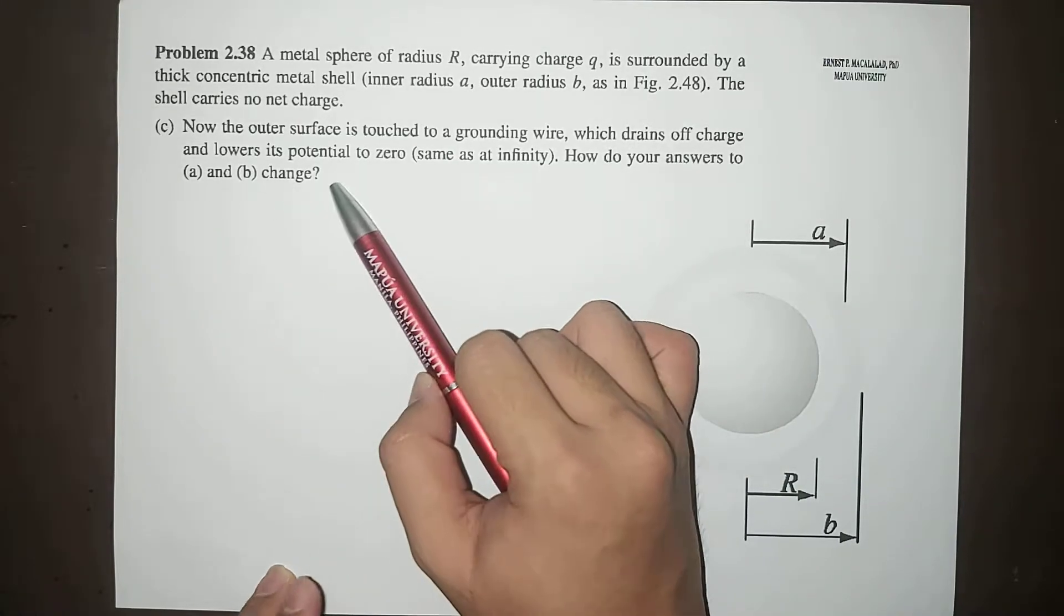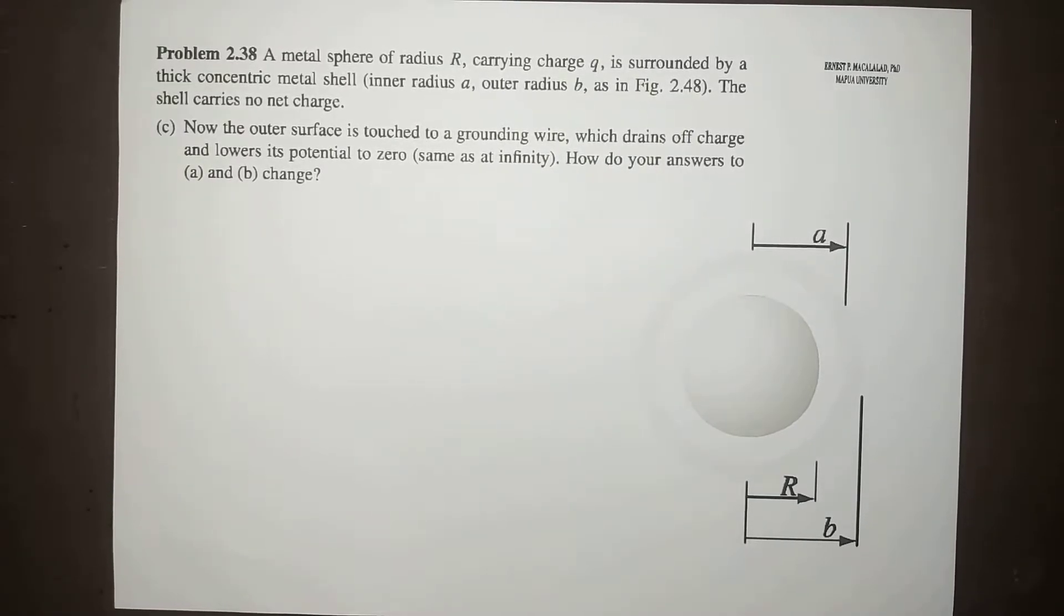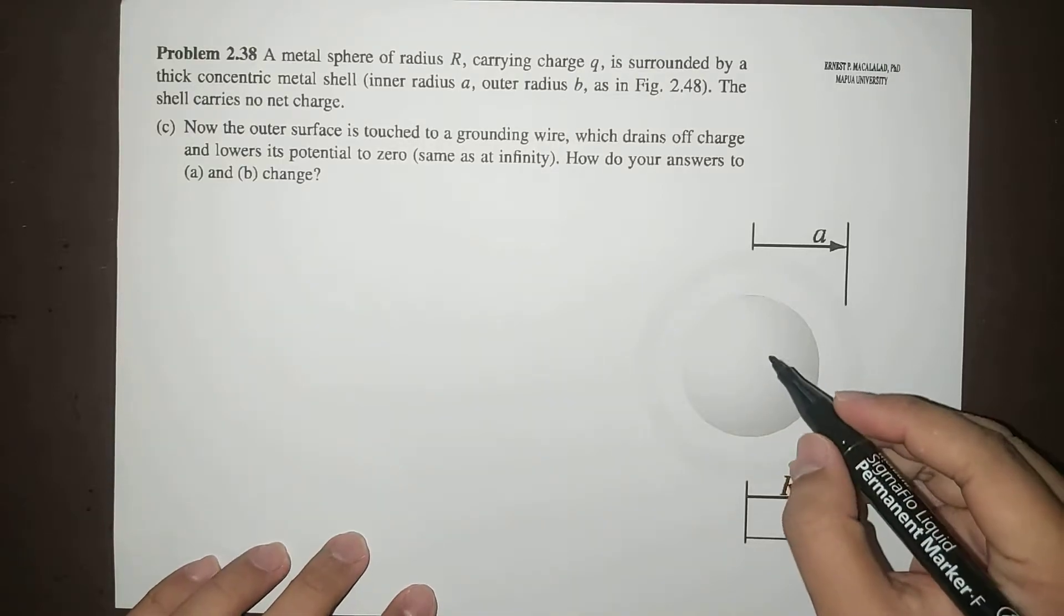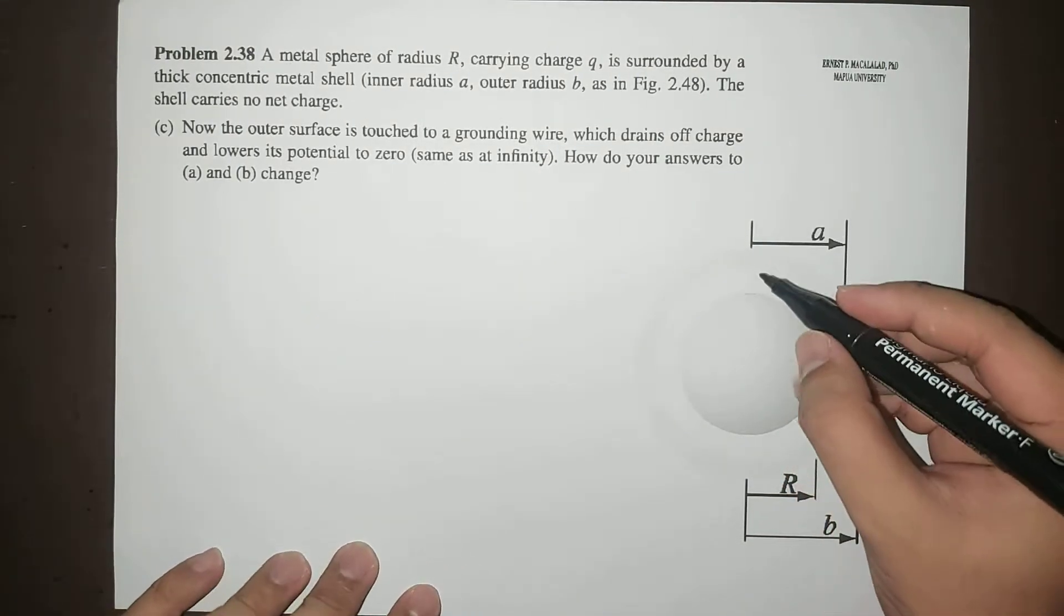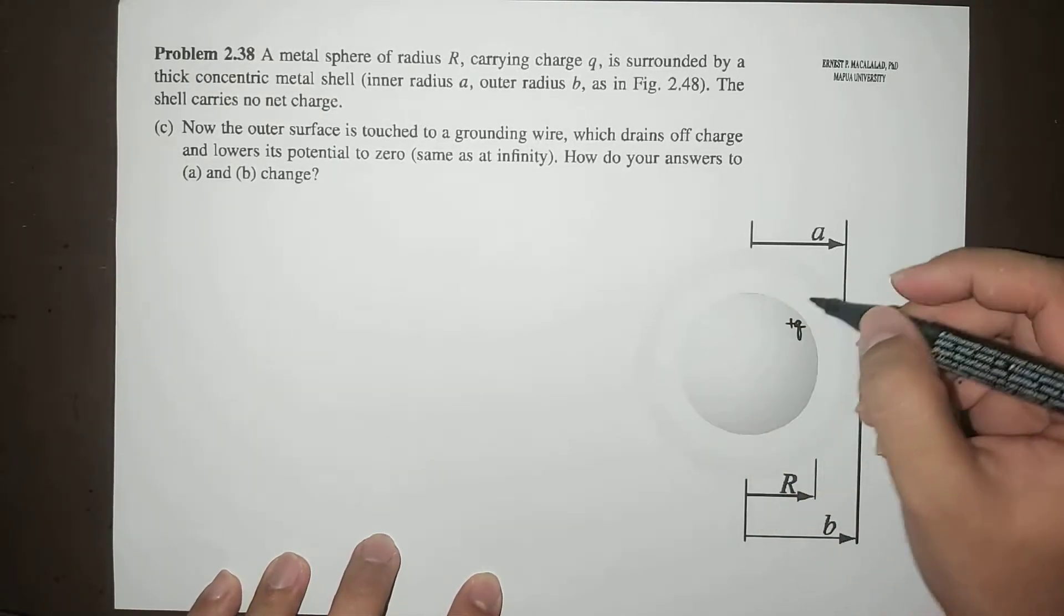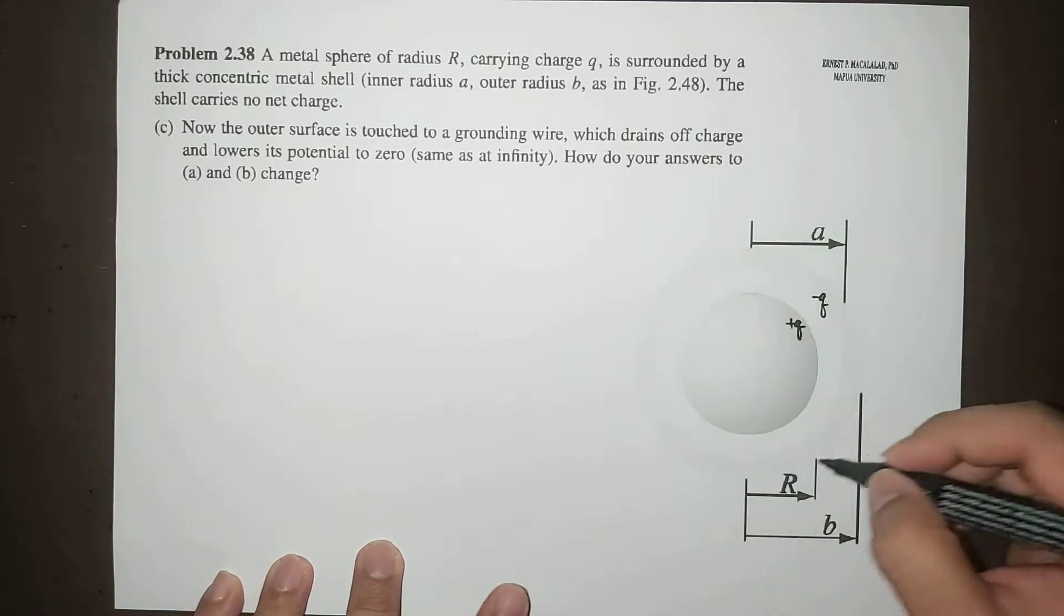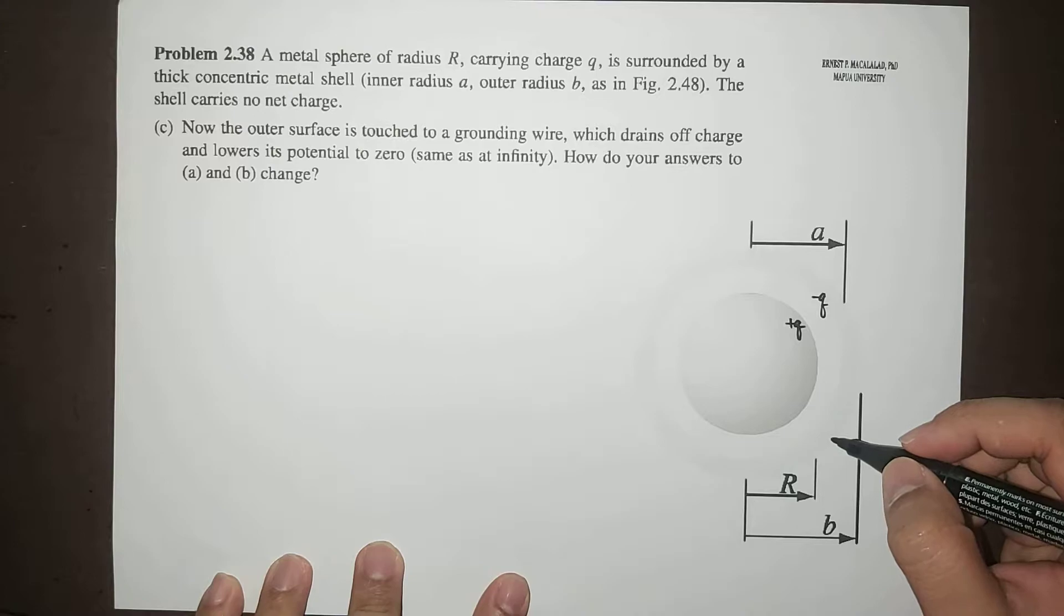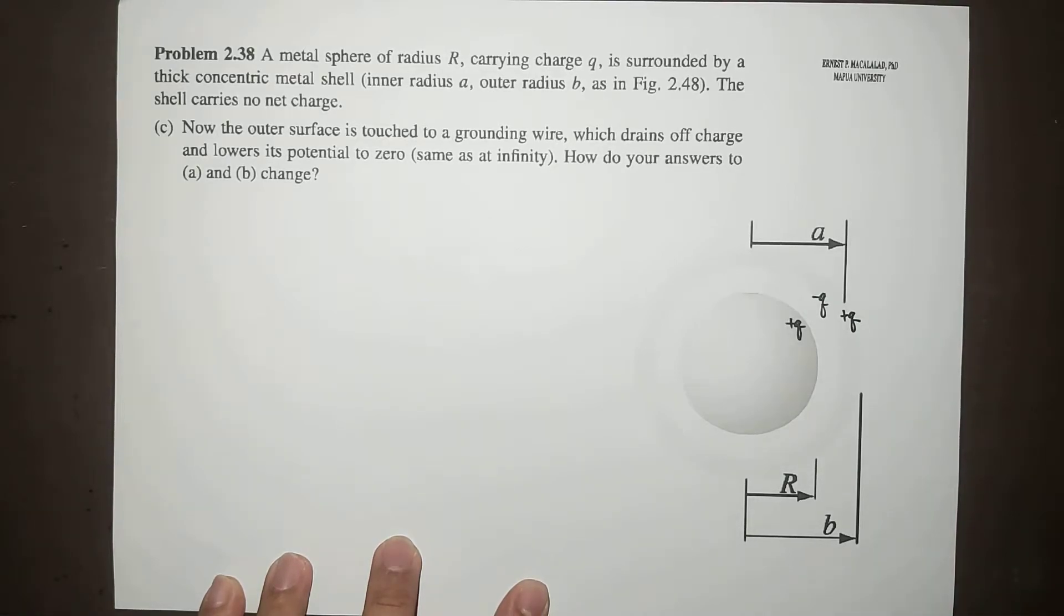Okay, so as a brief recall, we know that this metal sphere of radius R carries a charge at the surface, positive charge Q, and this induces a negative charge at the inner radius of your shell. Earlier, this caused positive charge to be accumulated at the outer surface.